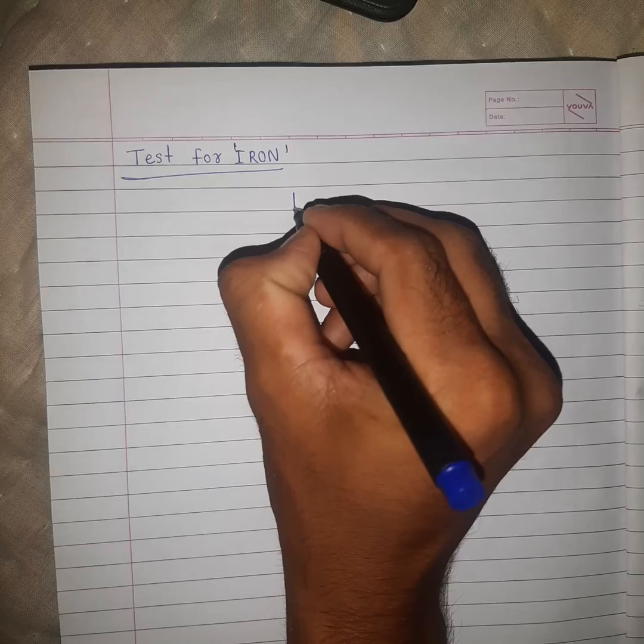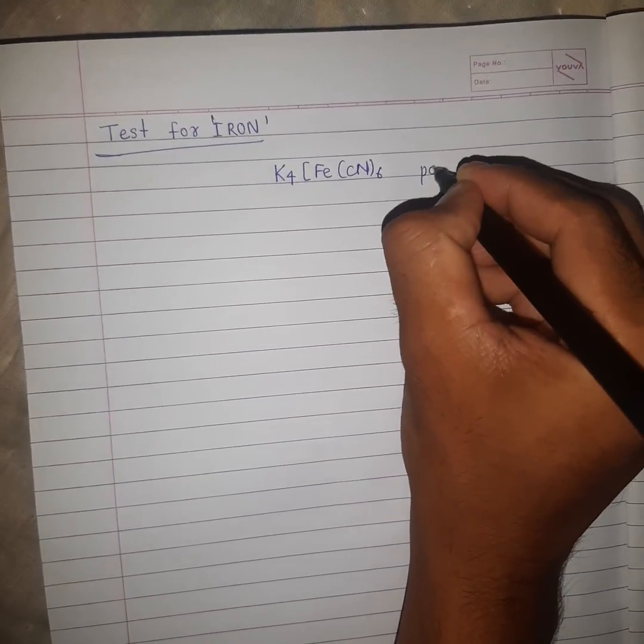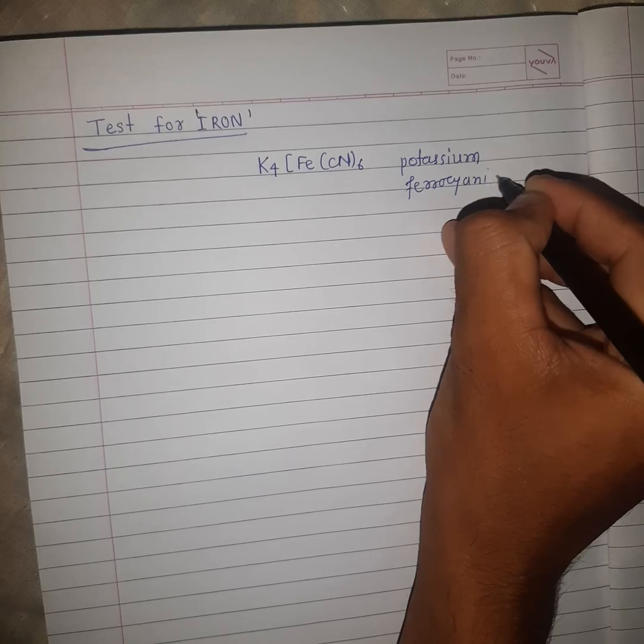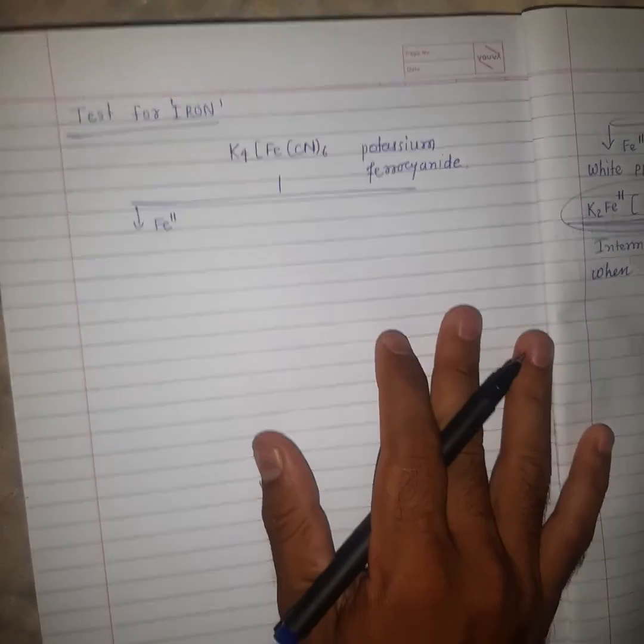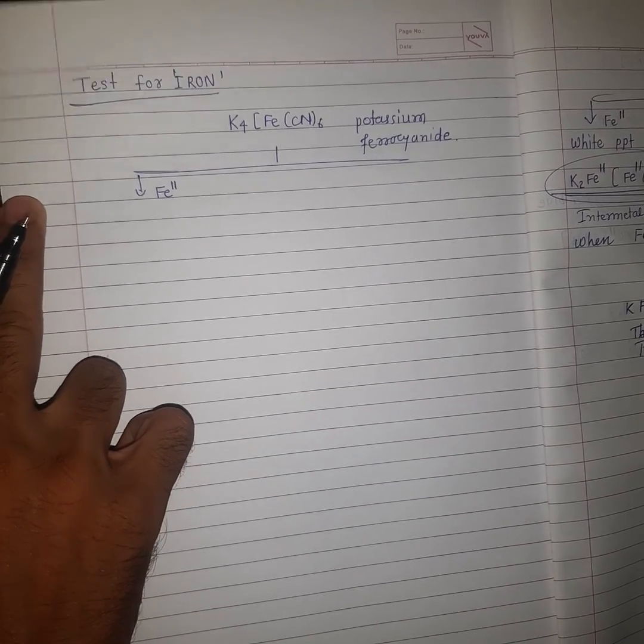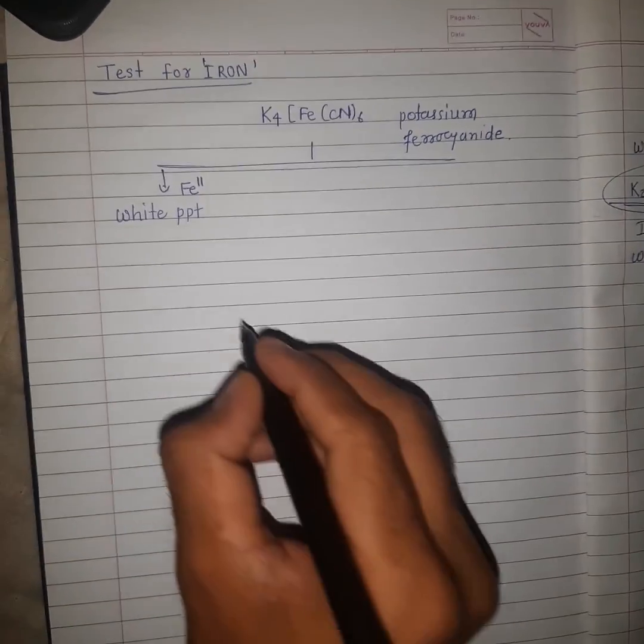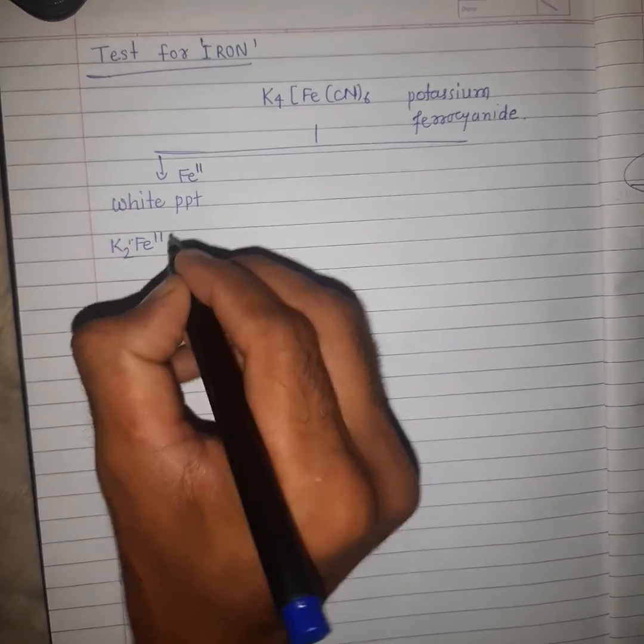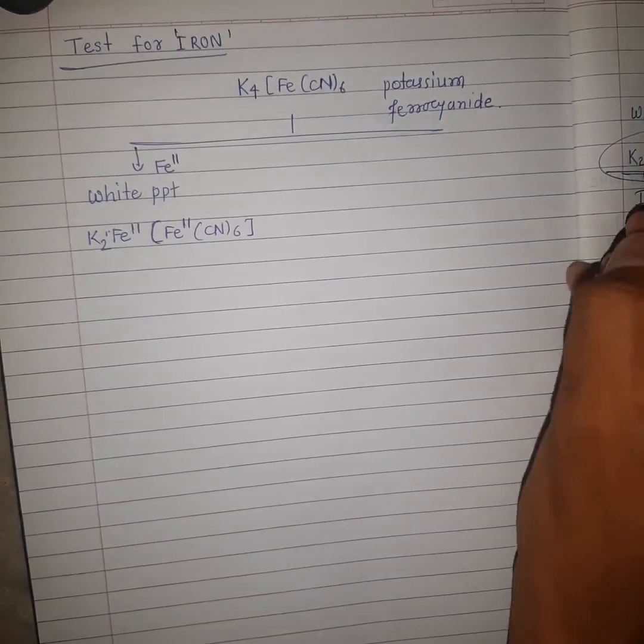Now K4[Fe(CN)6] potassium ferrocyanide. When Fe2+ iron is present in the solution, it will give white precipitate of K2Fe2[Fe(CN)6] complex compound.